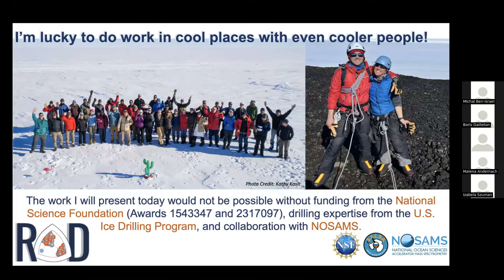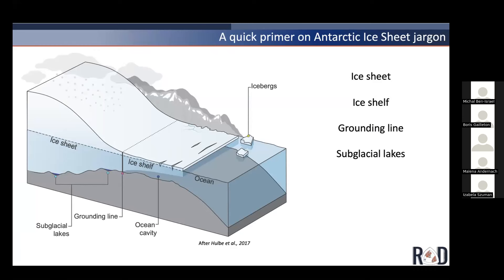Let me give a little primer on some of the jargon I'll be using today. When I say 'ice sheet' I'm talking about ice that's grounded on sediment or bedrock beneath it. As that ice sheet transitions from grounded to floating, the term 'grounding line' or 'grounding zone' marks that transition — between the ice sheet and ice shelf, and between the ocean world beneath the ice shelf cavity and the subglacial world. In the subglacial world we have pockets of fresh water called subglacial lakes.